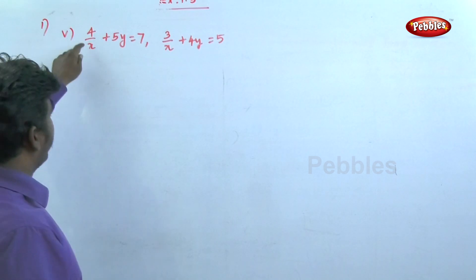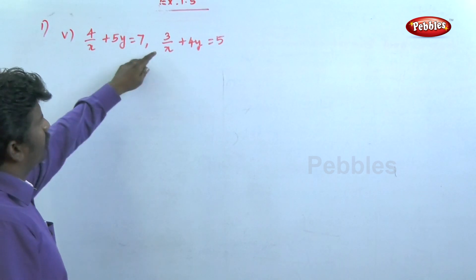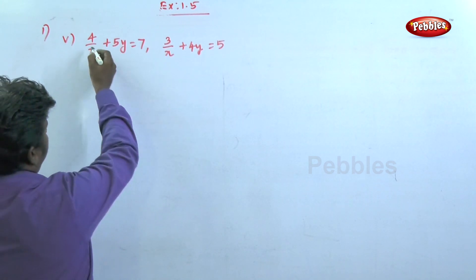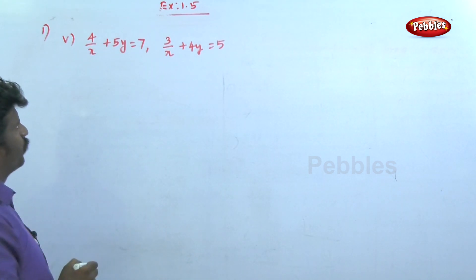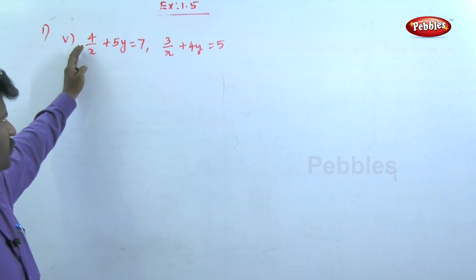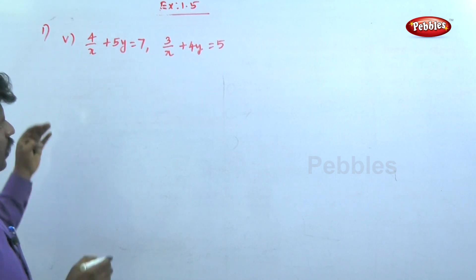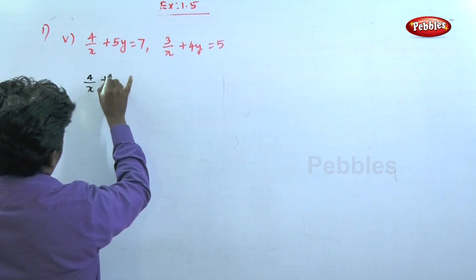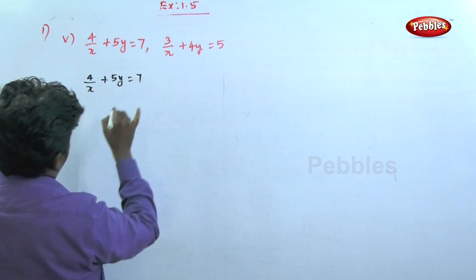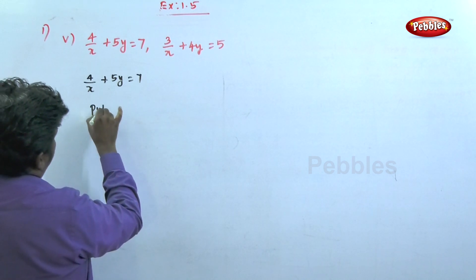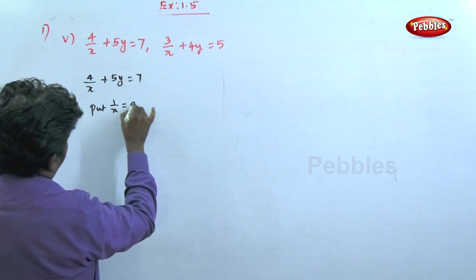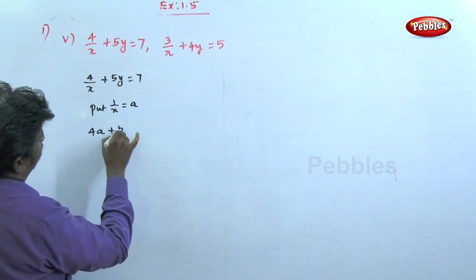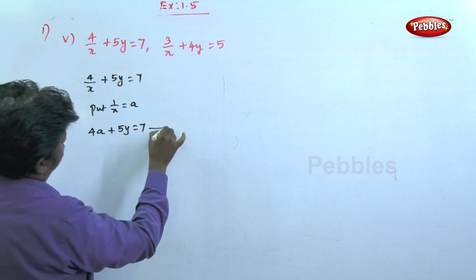See the next problem. 4 by x plus 5y is equal to 7. 3 by x plus 4y is equal to 5. Now, the x part is fractional, so let's substitute for that. Put 1 by x is equal to a. So 4a plus 5y is equal to 7. This is equation number 1.